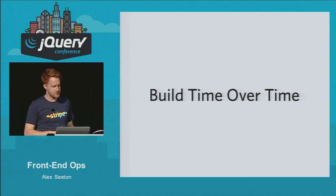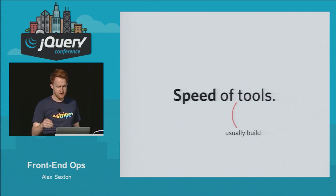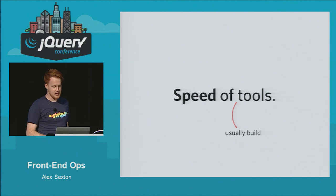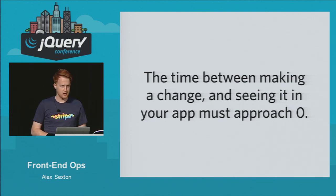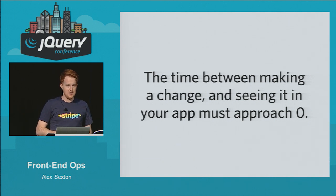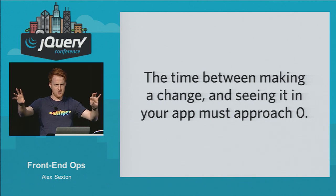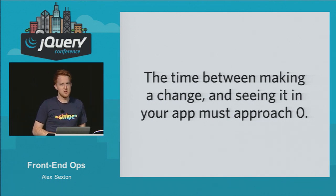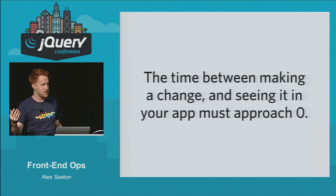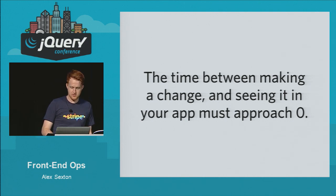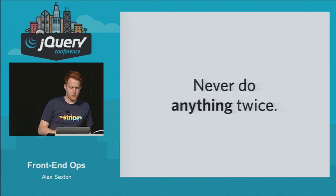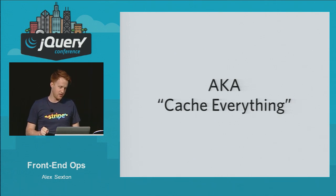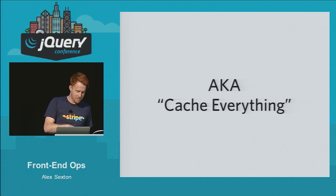The build over time gets us into that third type of speed — developer happiness. The build tools are really important. Rule number one: the time between making a change and seeing it in your app must approach zero. Think of Brett Victor's talk on editing code and seeing changes immediately. The more you divorce your changes from what you see in the application, the less excited your coworkers are to build good things.